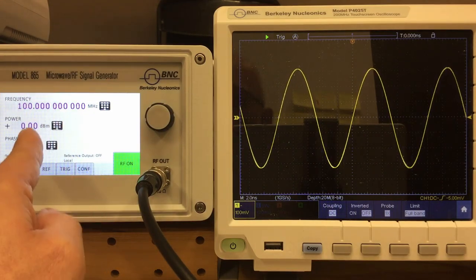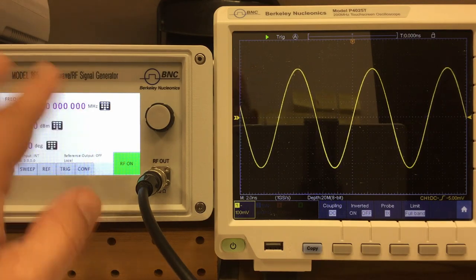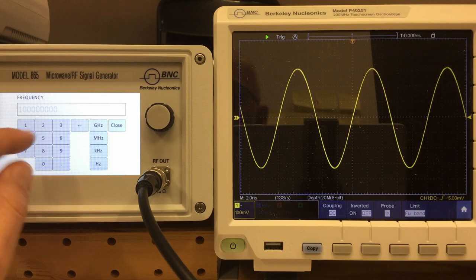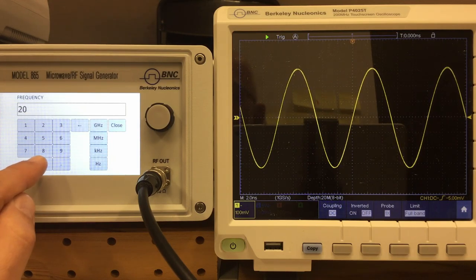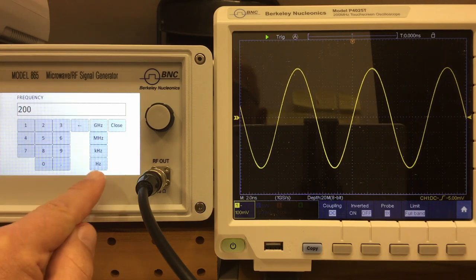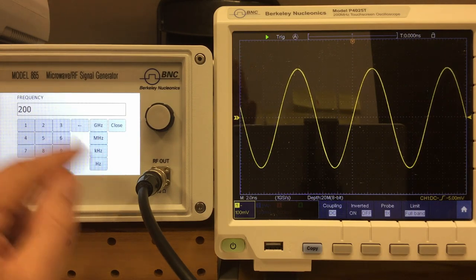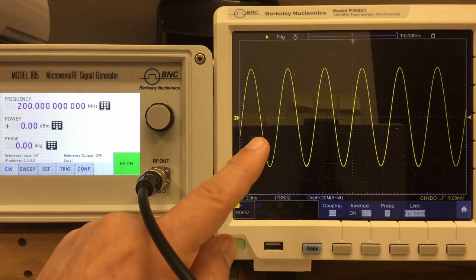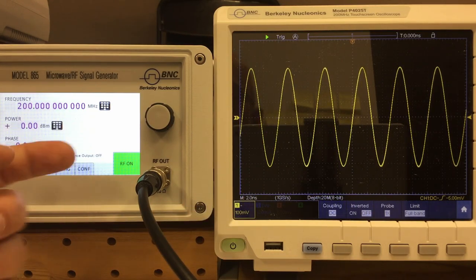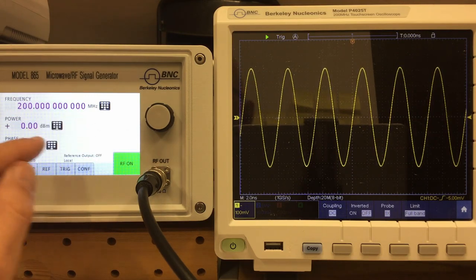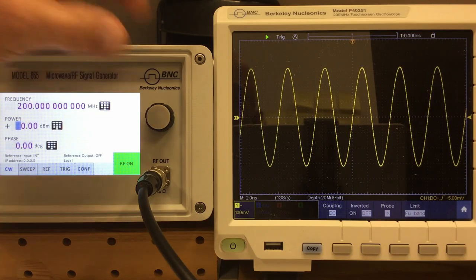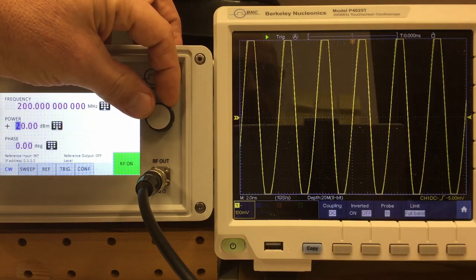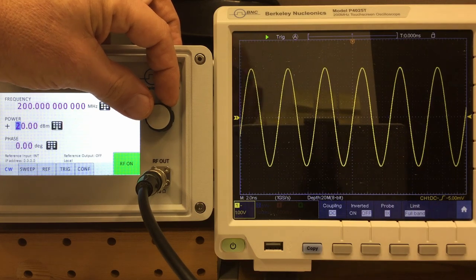The first two parameters, frequency and power, are self-explanatory. Whenever you come about such numerical parameter, you can change them either using that keypad icon and enter a new value. Usually it gives you also different units so you don't have to fumble around too much with a decimal point. Let's say we go to 200 MHz, and then we have a 200 MHz sine wave on the scope. And the second parameter, power, you can select a digit and then use the turn knob. We can go up here to 20 dBm.